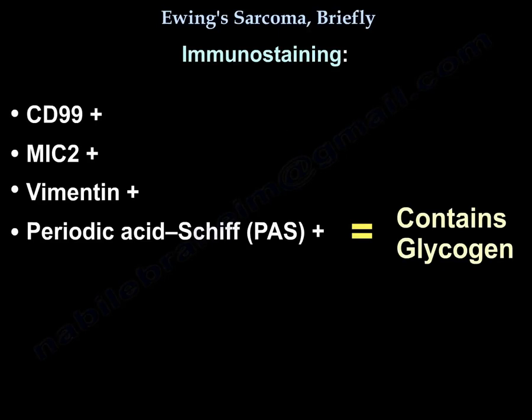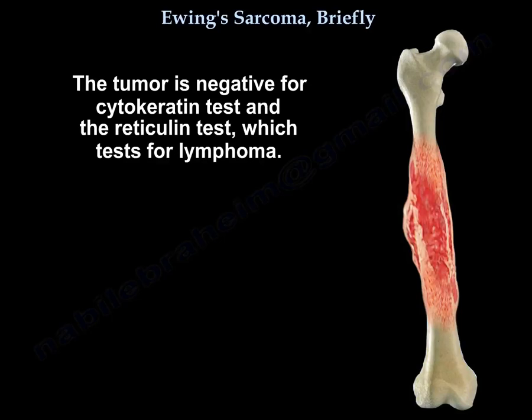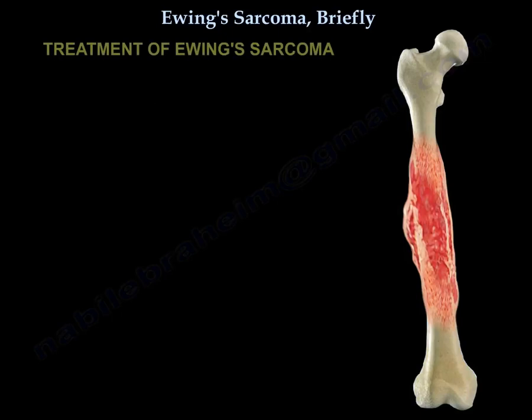The immunostaining: CD99 positive, MEK2 positive, Vimentin positive, PAS positive. The PAS tests the glycogen. The tumor is negative for cytokeratin test and for reticulin test, which tests for lymphoma.